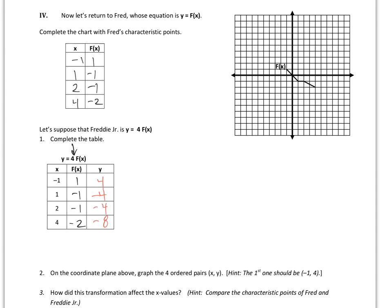Negative 1, positive 4 — left 1, up 4. Positive 1, negative 4 — right 1, down 4. Positive 2, negative 4 — right 2, down 4. Positive 4, negative 8 — right 4, down 8. Connecting the dots of my critical points, you can see it's still a lightning bolt, but it has been stretched vertically.